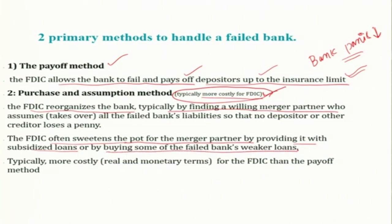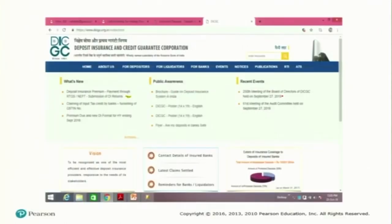This purchase and assumption method is typically more costly for the FDIC in real and monetary terms than the payoff method, because the FDIC often has to sweeten the deal for the merger partner by providing subsidized loans or by buying some of the failed bank's weaker loans. However, in a practical sense, the second method is most preferred because it is better not to allow a bank to completely fail. When the FDIC understands that a bank's net worth has become very weak, it encourages the purchase and assumption method.